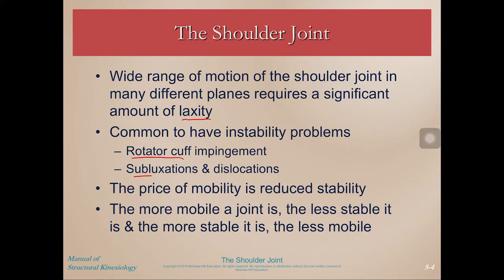Rotator cuff impingement, subluxations, dislocations — the price of mobility at any joint is reduced stability. We have this spectrum of mobility and stability. You can't really have the most of both — you can't be as mobile as possible and as stable as possible at the same time.